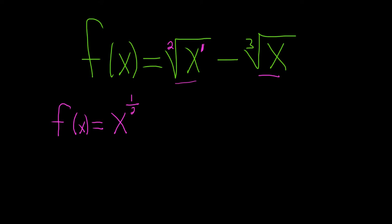It's always this number over this number, and then minus, same thing here, it'll be 1 over 3, so x to the 1 over 3.